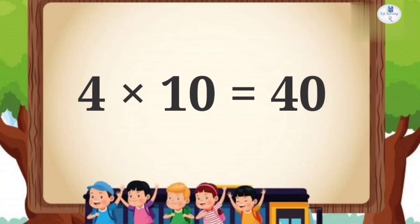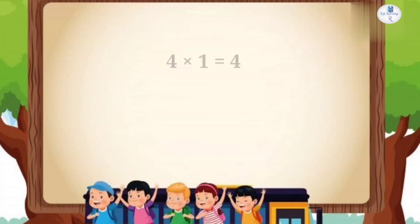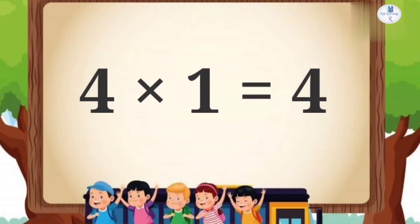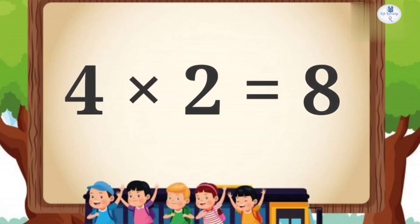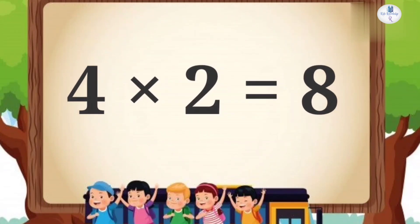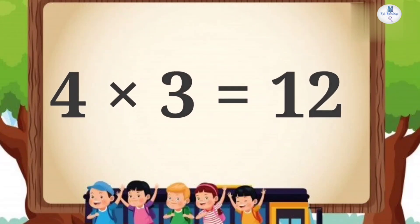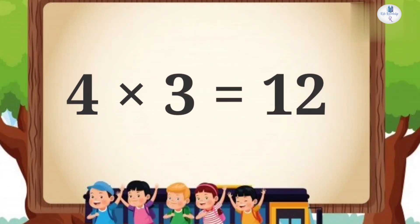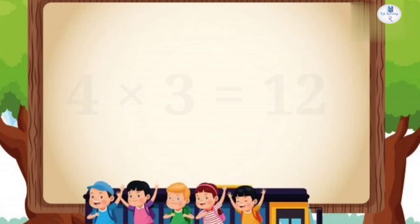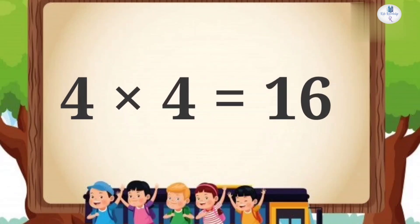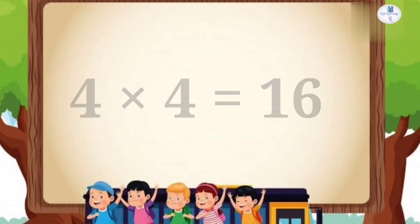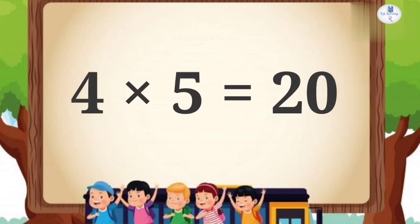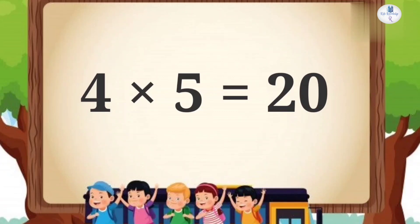Four ones are four. Four twos are eight. Four threes are twelve. Four fours are sixteen. Four fives are twenty.